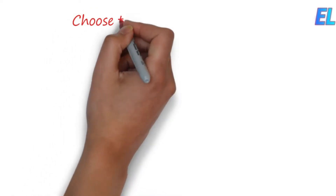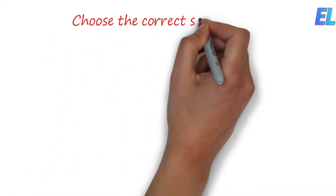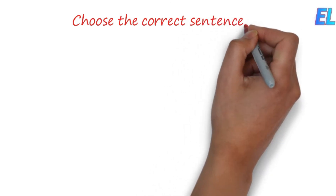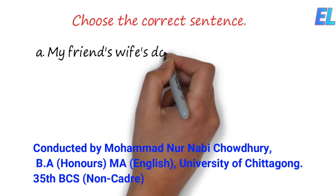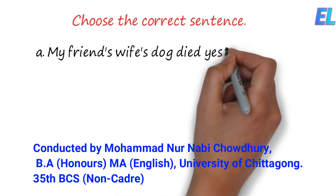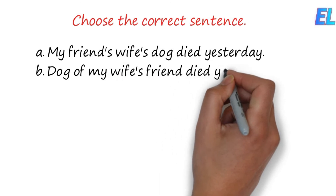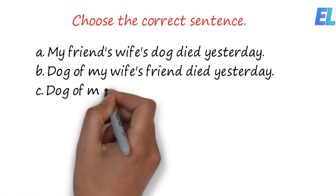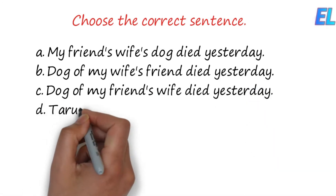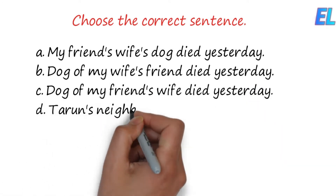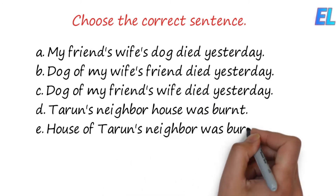Let's see which sentence is correct here. My friend's wife's dog died yesterday. Dog of my wife's friend died yesterday. Dog of my friend's wife died yesterday. Dorun's neighbor's house was burnt. House of Dorun's neighbor was burnt.